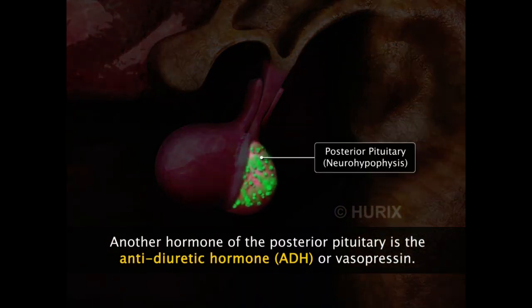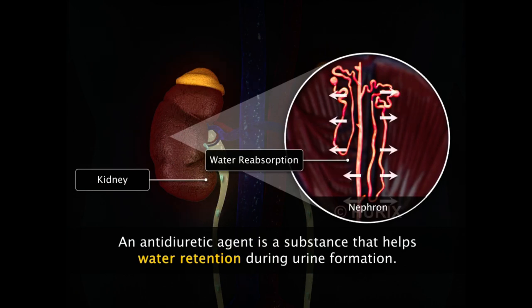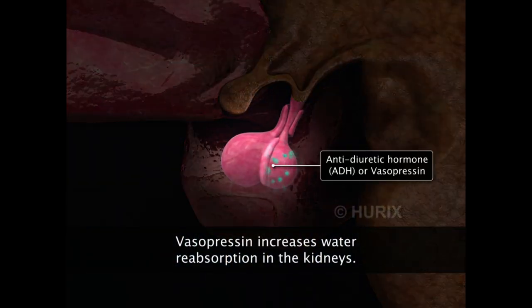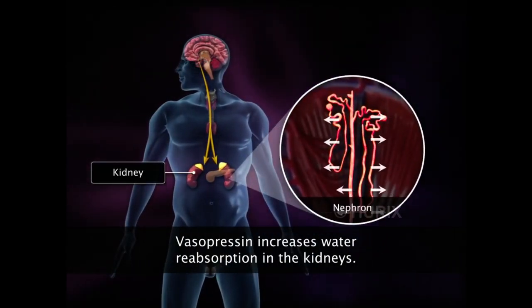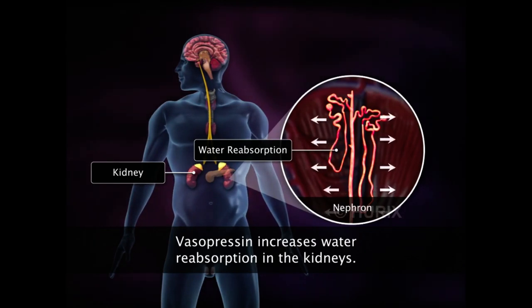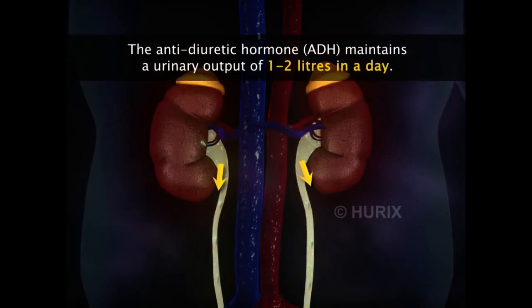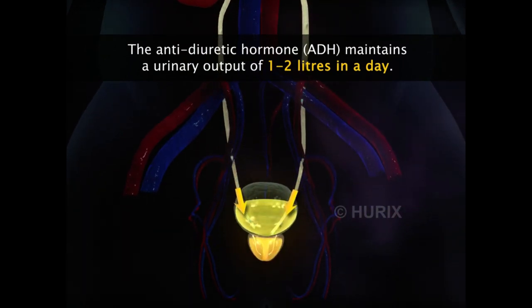Another hormone of the posterior pituitary is the antidiuretic hormone, ADH, or vasopressin. An antidiuretic agent is a substance that retains water in the body and decreases the amount of urine formed. Similarly, ADH acts mainly on the distal and collecting tubules of the kidney and increases the reabsorption of water into the body. It thus leads to a reduction in the formation of urine. It is by virtue of ADH that a normal individual secretes only one to two liters of urine in a day.